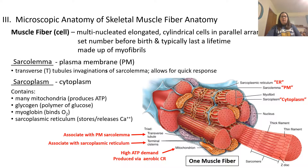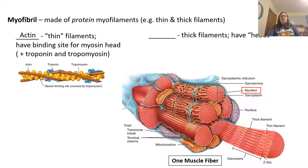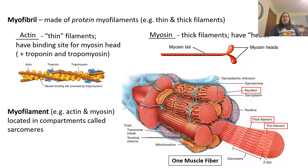Myofibrils are made of protein myofilaments called actin and myosin — thin and thick filaments respectively. The thin filaments are actin, which have binding sites for the myosin heads, but they are covered by troponin and tropomyosin. In the sarcomere the thinner line is the actin. The thicker line is the myosin — these are the thick filaments with special heads that look like a double golf club. These myosin heads connect to the binding sites on actin. So myofilaments are actin and myosin, located in compartments called sarcomeres.